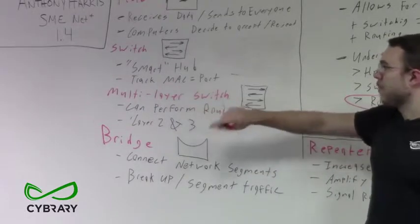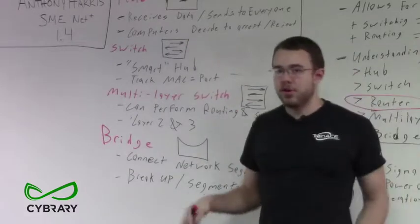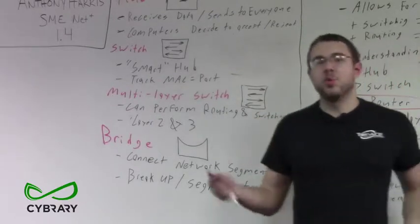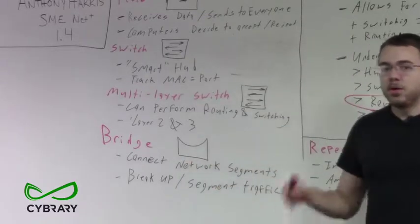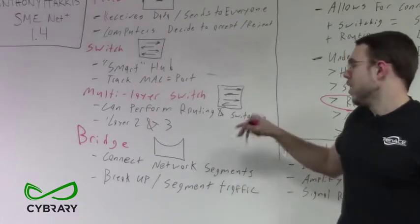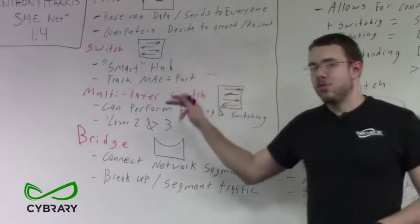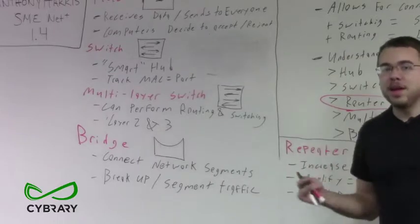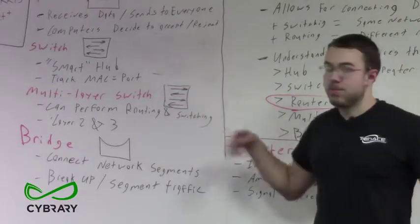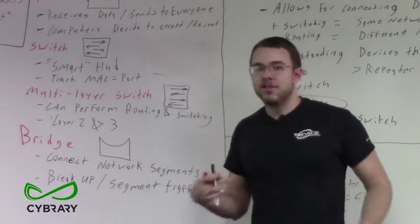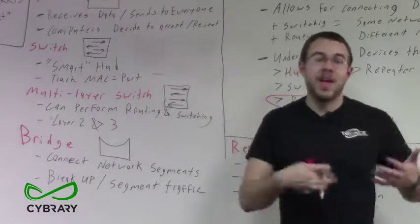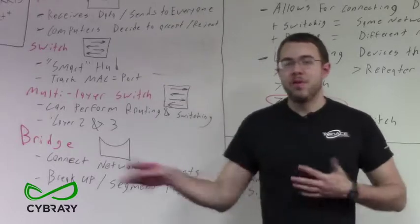Our multi-layer switch performs all the standard operations of a standard switch, but our standard switch only works at Layer 2. Our multi-layer switch works at Layer 2 and Layer 3, can perform routing, set up VLANs, and configure additional settings we can't on a standard switch. If you hear 'Layer 3 switch' or 'Layer 2 and Layer 3 switch,' they're referring to a multi-layer switch — one that can inspect IP addresses and route data if necessary.